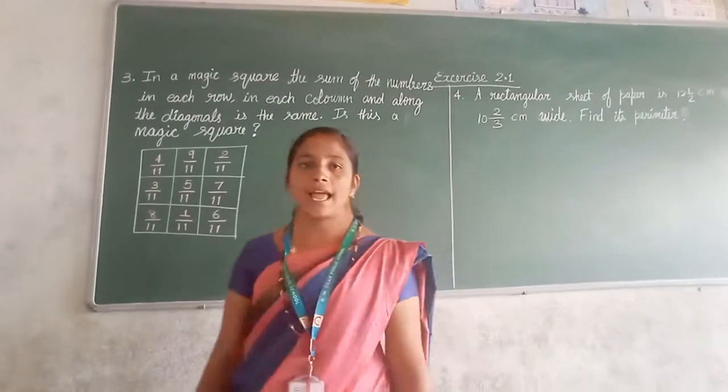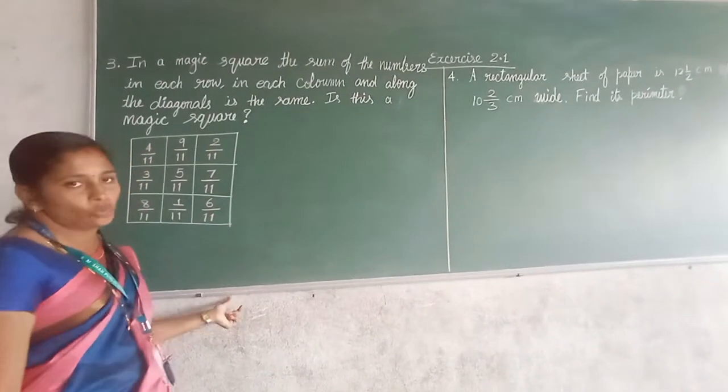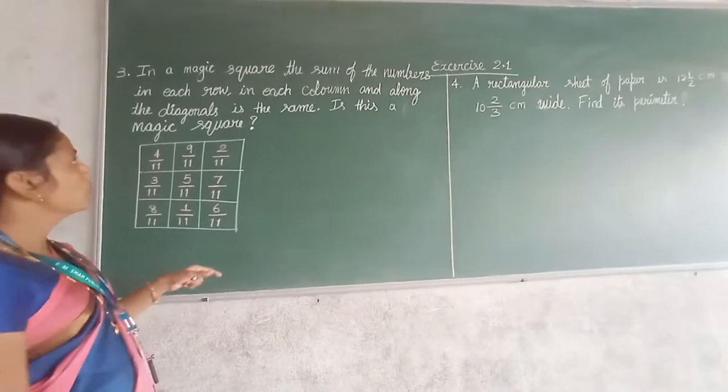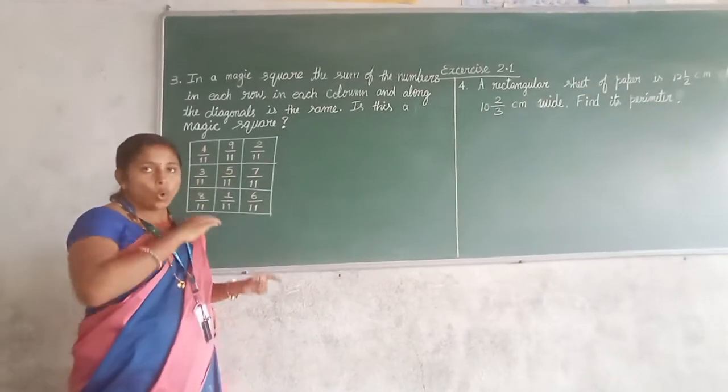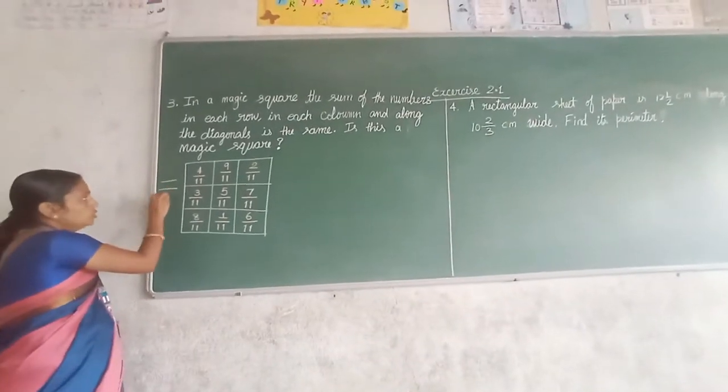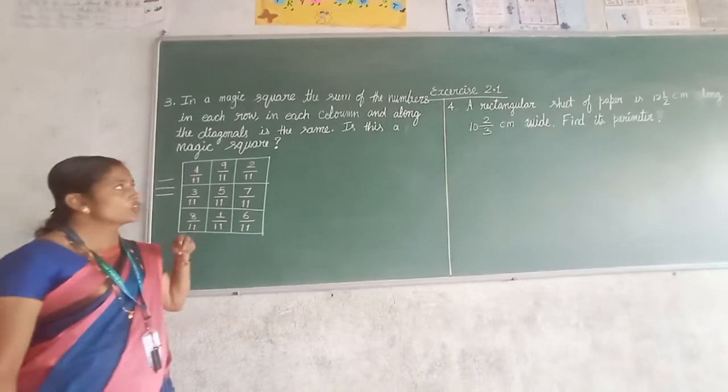The third question is asking about a magic square. They have given the magic square where the sum of the numbers in each row. Hope you know that. What are the numbers?